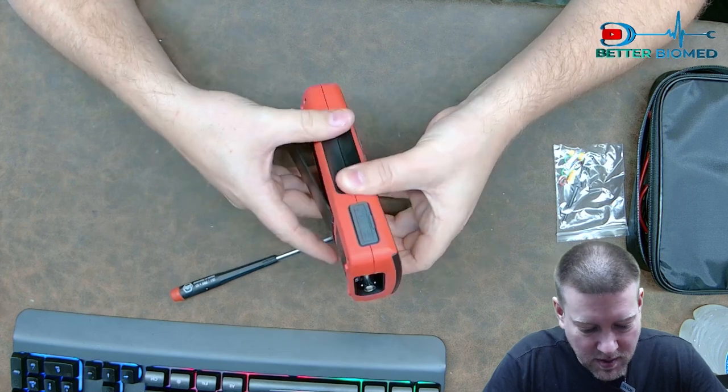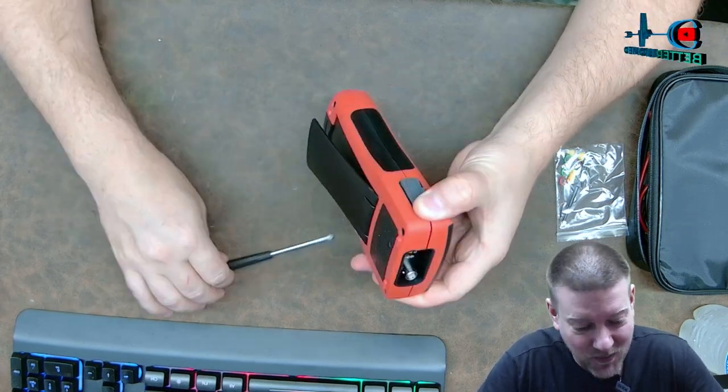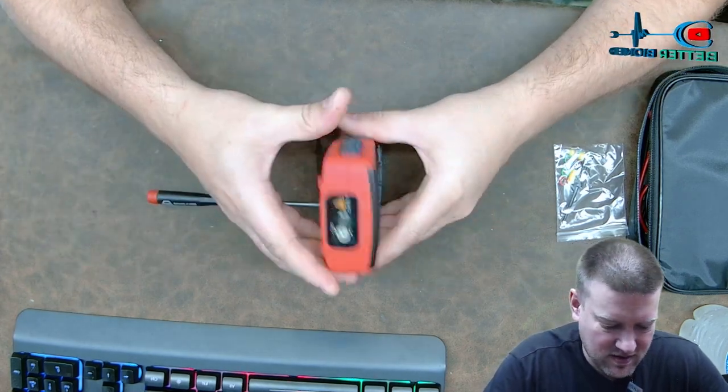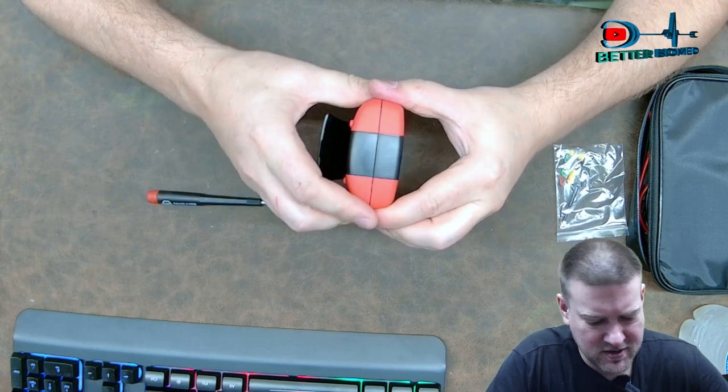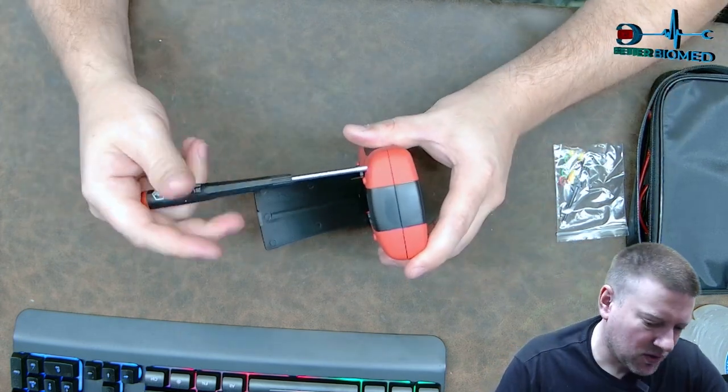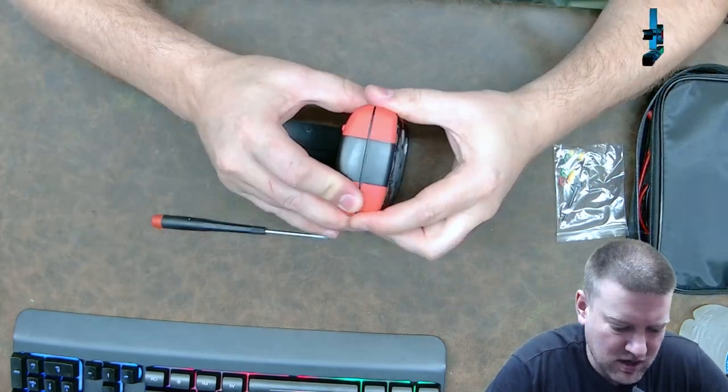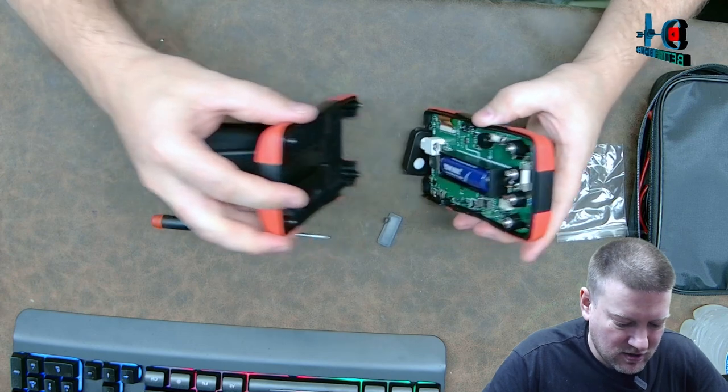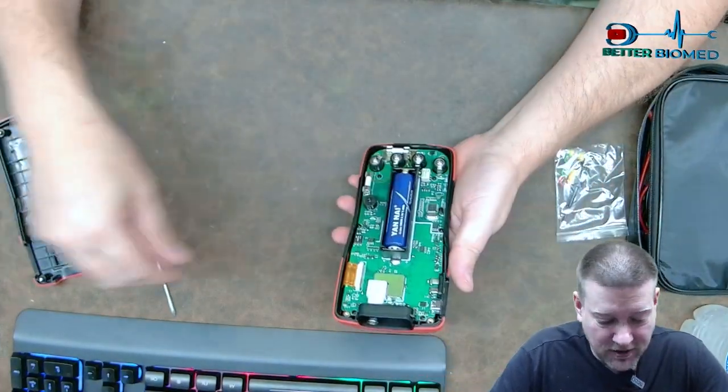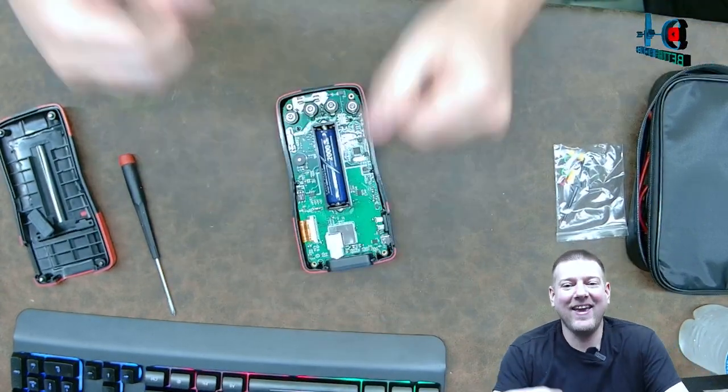All right. Well, the rubber overmolding is holding it together quite well. Quite well. Come on. It wants to. I know it does. It feels like something that's still spring loaded, holding it together. Okay. Wow. That guy is definitely held in well. Nice. Nice. Yes.